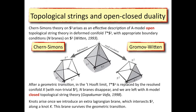There is also a nice way to introduce knots in this picture. You have to introduce an extra Lagrangian brane. On the left-hand side, it is engineered in such a way that it intersects the base S^3 along a knot you are interested in. Then topological string amplitudes with the presence of such an extra brane compute knot invariants for the knot engineered by this intersection. This was considered by Ooguri and Vafa.